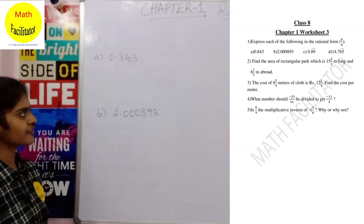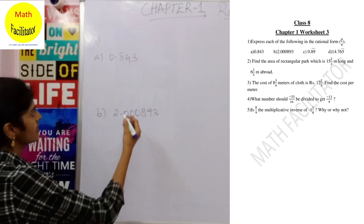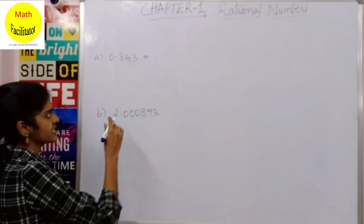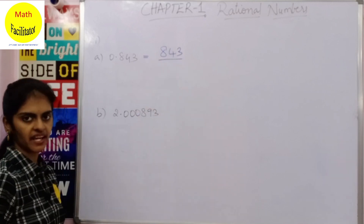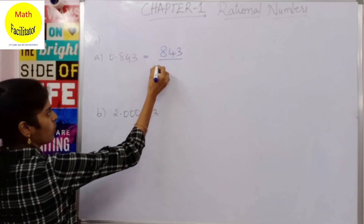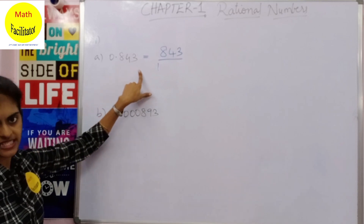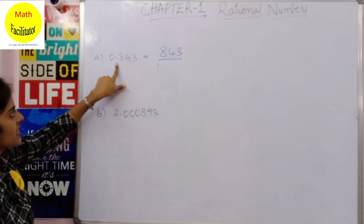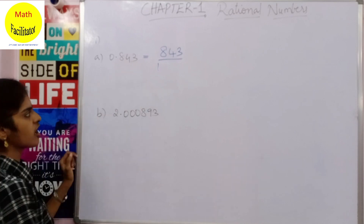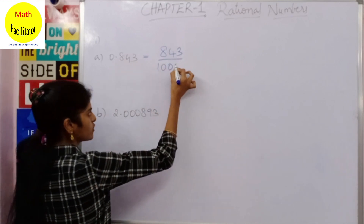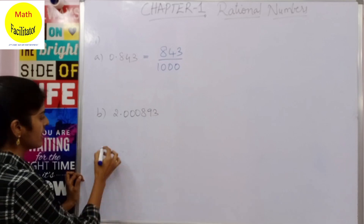The first question is to convert into rational form. It is very easy: write the number 843 as it is, divided by 1 along with as many zeros as the decimal places. How many decimal places are there? 1, 2, 3 — so you write 3 zeros. This is the simple way.